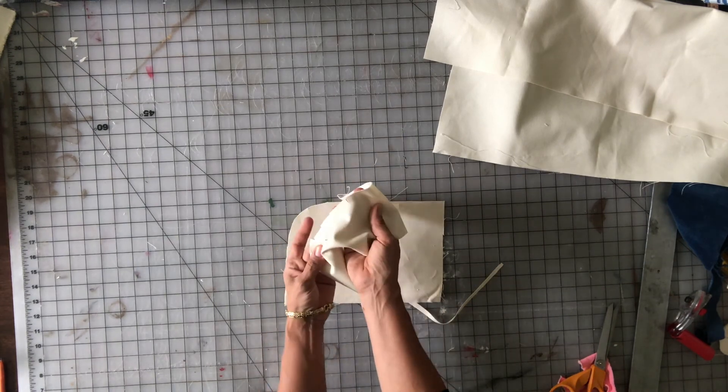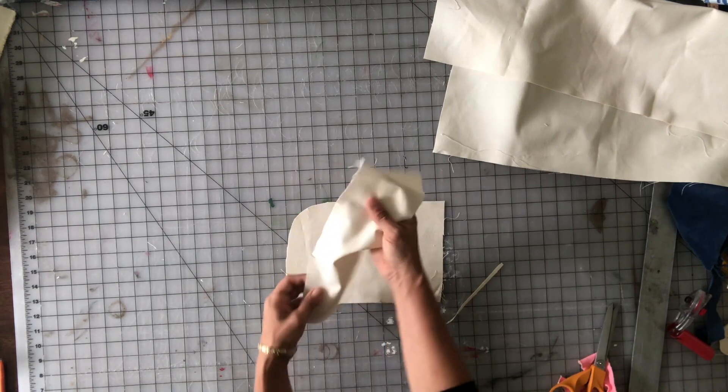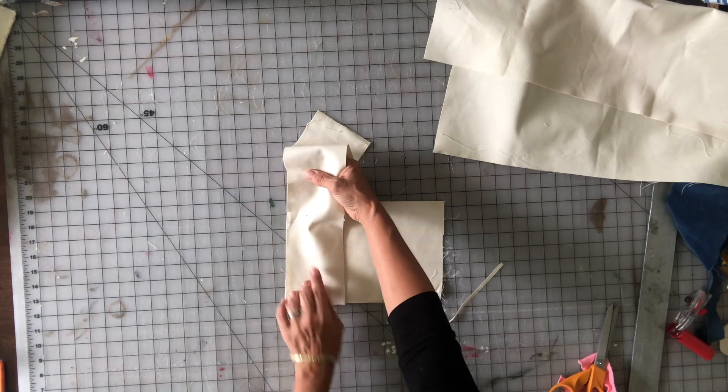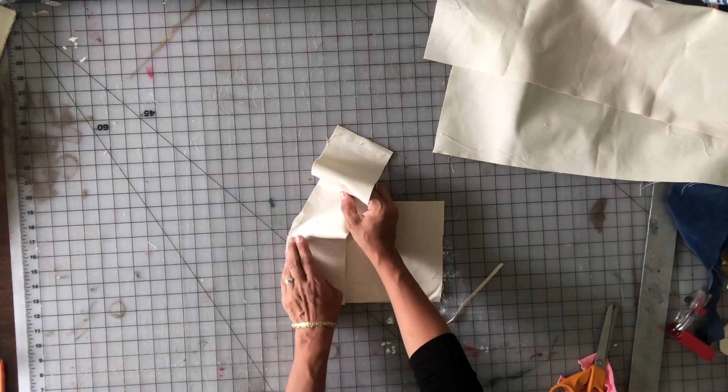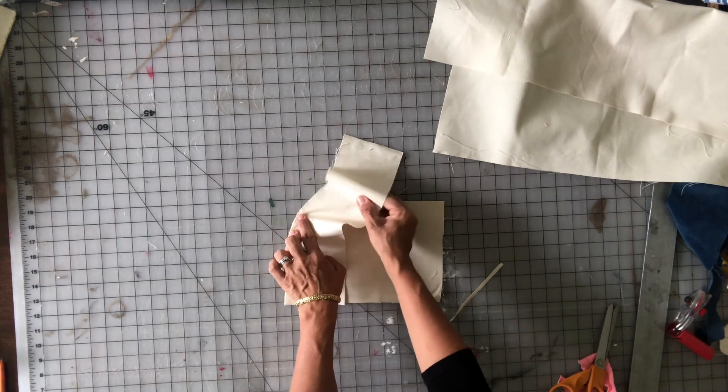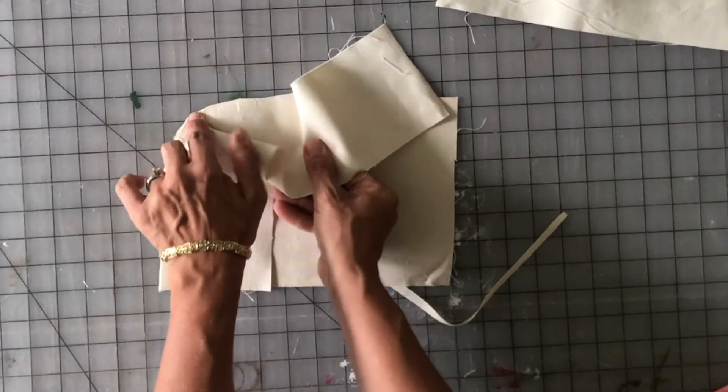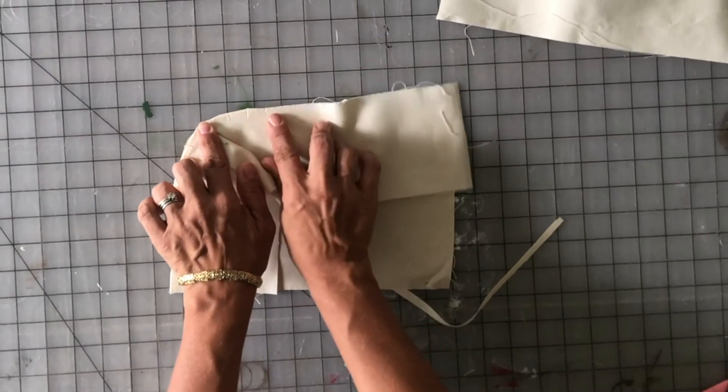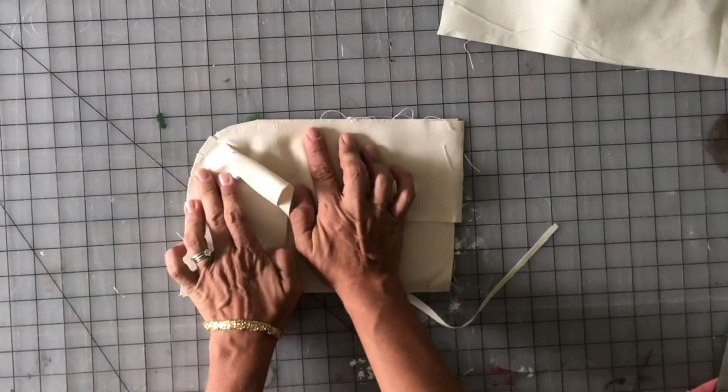So I snipped into it on that curve, lay that down and we're going to pin this. You see how now those little snips allow your fabric to get around that curve and lay down flat.